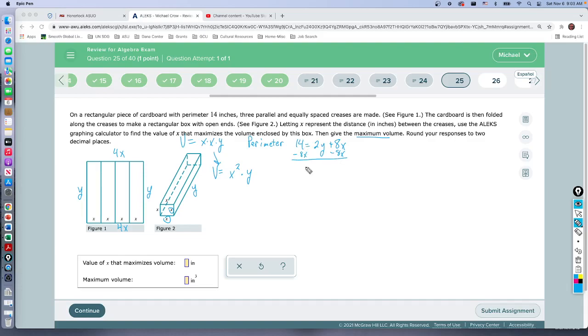So we subtract 8X from both sides—we get 14 minus 8X. Not like terms, can't do anything there—2Y. Divide by 2, divide this whole thing by 2, which means we distribute it to both sides, to both terms. 14 divided by 2 is 7, 8 divided by 2 is 4X. So that's what Y is: 7 minus 4X. So the function for our volume is going to be X squared times 7 minus 4X.